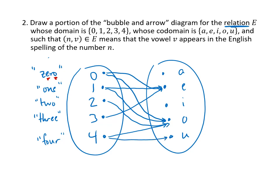So in this case, we have the complete bubble and arrow diagram for this relation. Notice that A and I don't have any arrows pointing to them. That's okay. It's still a perfectly fine relation.